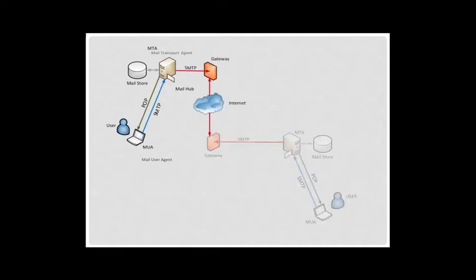We'll look at this protocol in detail in a later video. The Mail Hub is simply a computer that can both store and forward emails. To forward the email on to the recipient, the Mail Hub uses an application known as the MTA, or Mail Transport Agent. The MTA also uses the SMTP protocol to forward the email on, possibly directly to the recipient if they use the same Mail Hub, or through gateways and the internet to the recipient's Mail Hub where the message is stored. The message is finally delivered when the recipient's Mail Tool contacts their Mail Hub and retrieves their messages using one of the POP, IMAP, or MAPI protocols.